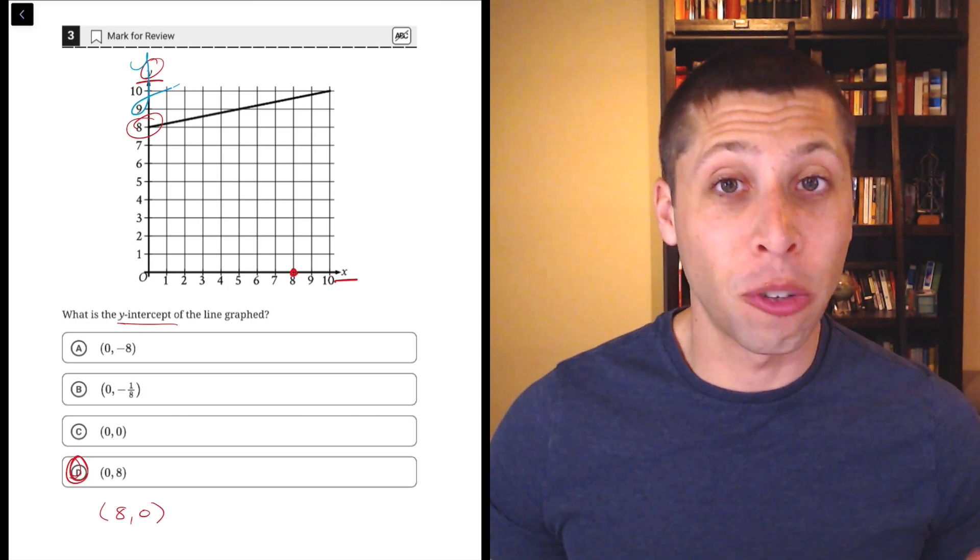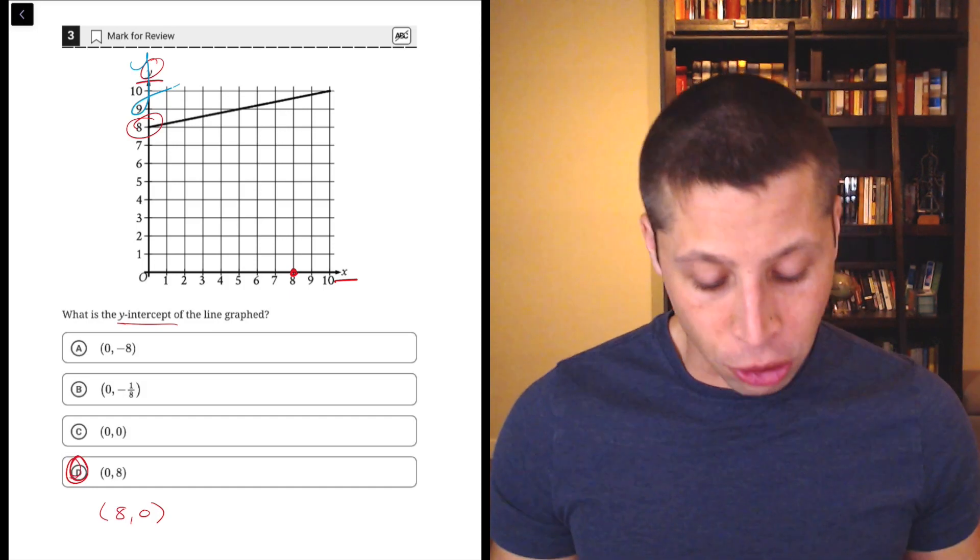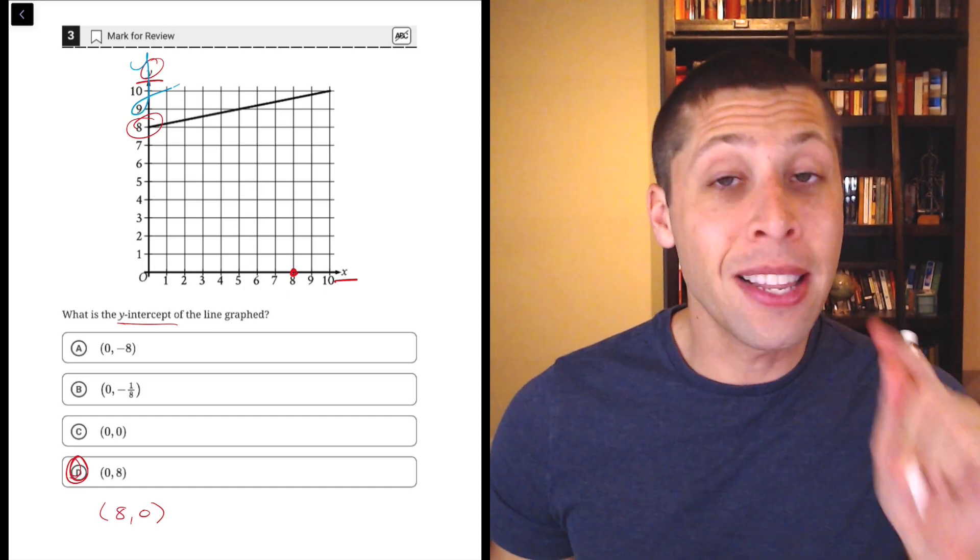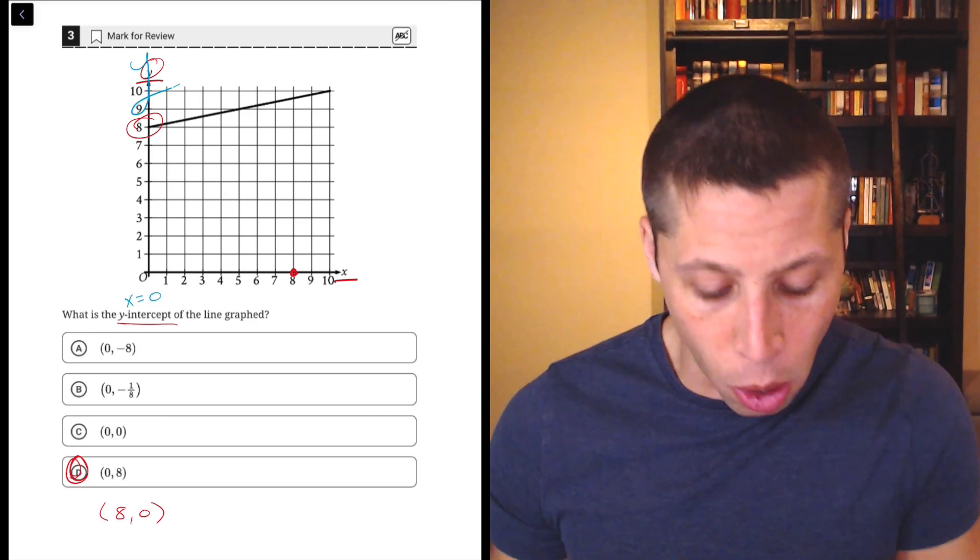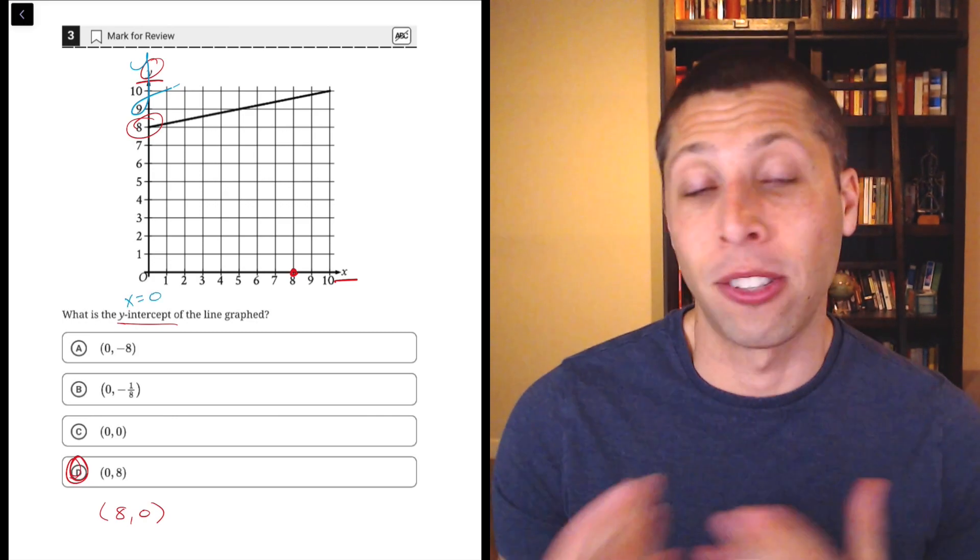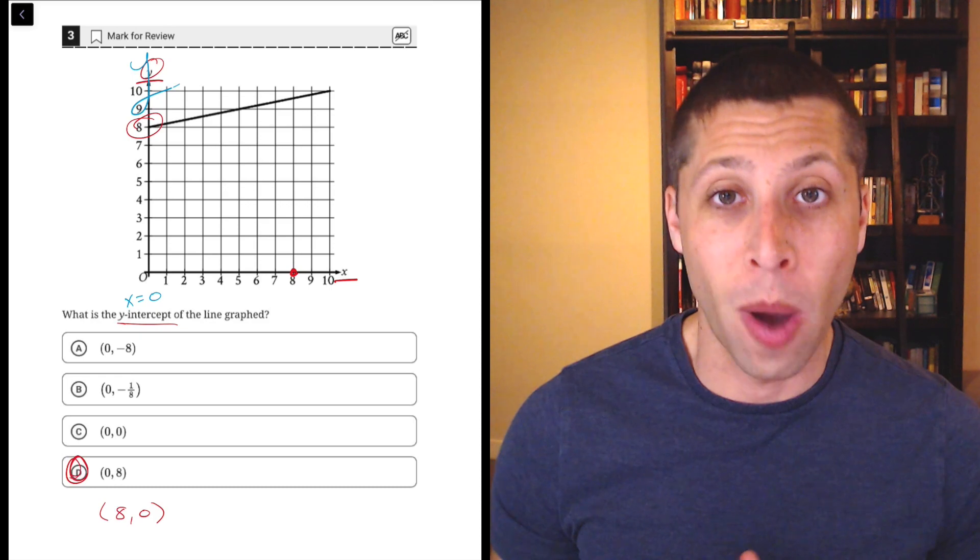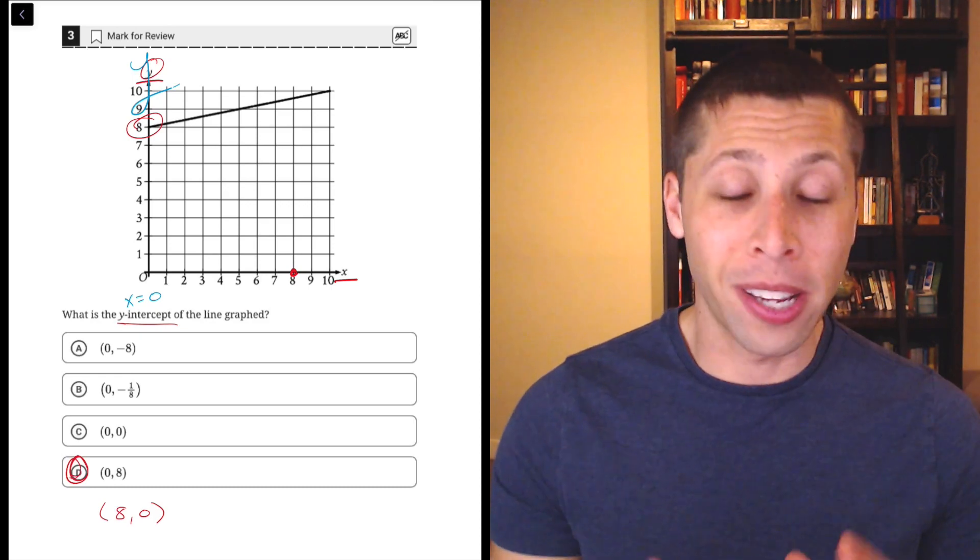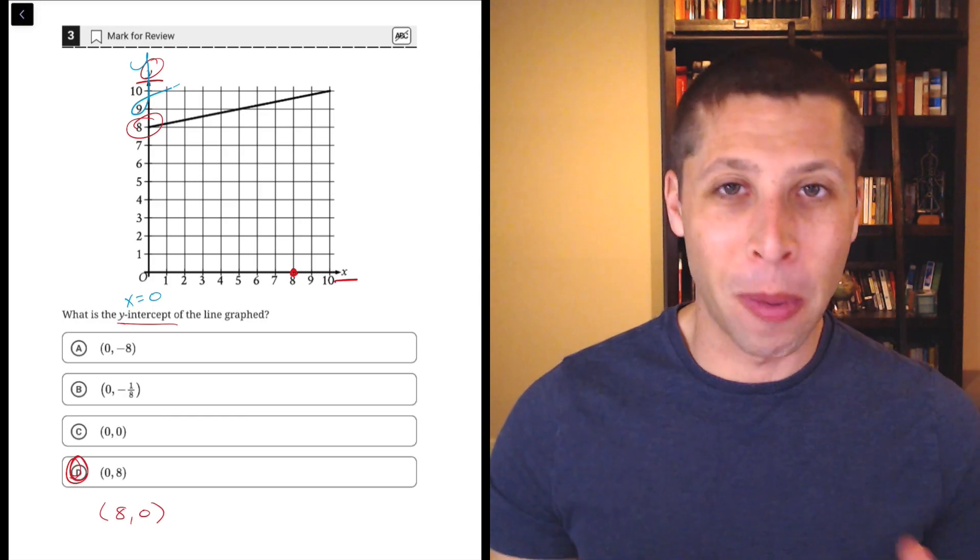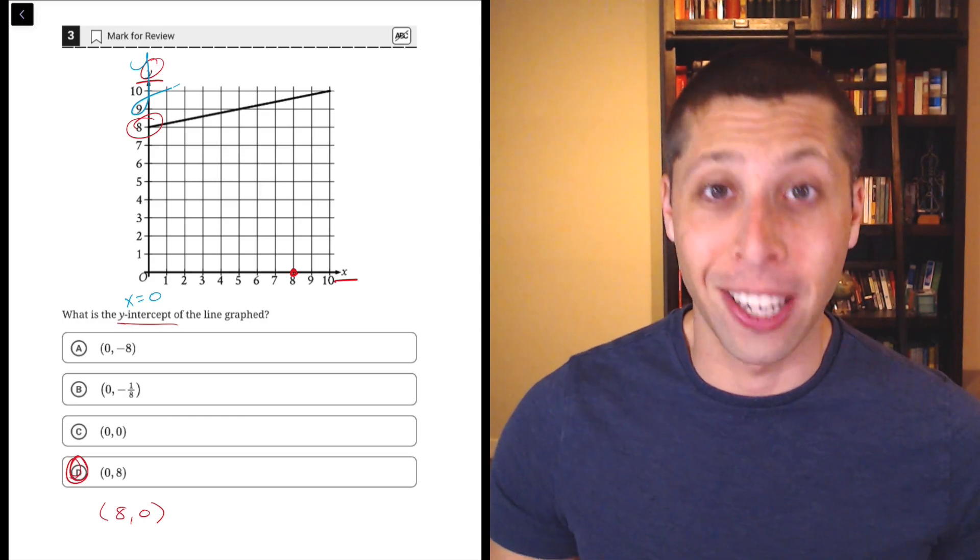But also, if we have a y-intercept question where we don't involve the graph at all, just remember that the main thing that is true of every single y-intercept is that the x-coordinate will always equal zero. So we can plug that x into an equation if we've got it and find the y-intercept just by putting in zero and seeing what happens. This is a very important concept. It will come up again and again, so make sure you're comfortable with the concept of a y-intercept.